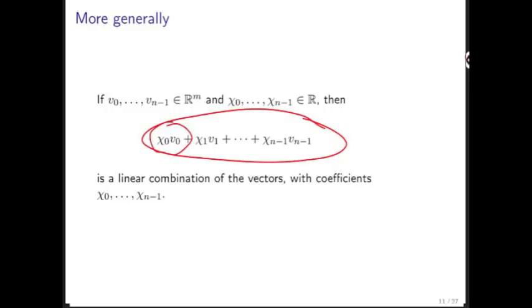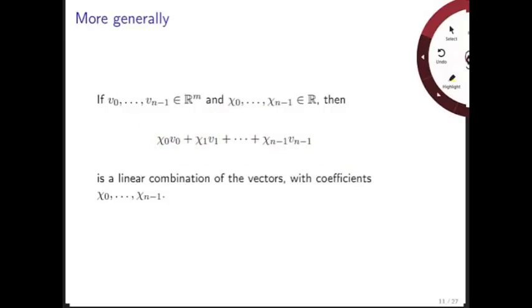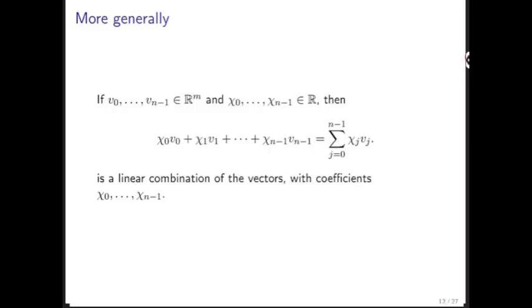What is this? Chi 0 times v0 plus chi 1 times v1 and so forth. We can use shorthand for this and write this using the summation symbol. This is for j equals 0 to n minus 1, chi sub j, the scalar, times the j-th vector v sub j.